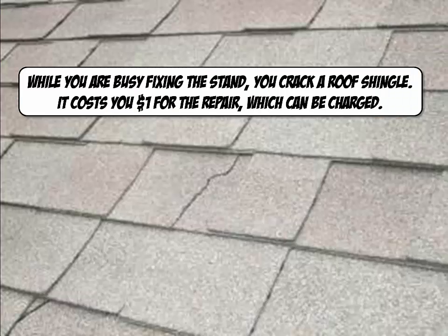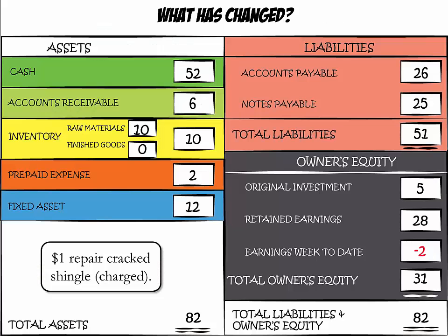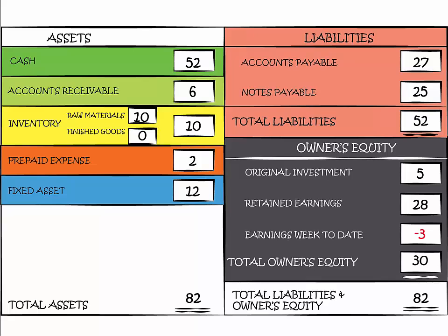While installing the sink, you cracked a roof shingle. The repair costs $1, which is charged to your account. Accounts payable goes up from $26 to $27. Expenses also affect our earnings, so earnings are further reduced from negative $2 to negative $3.